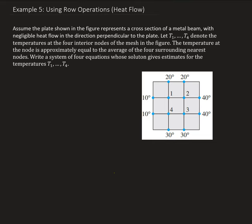In this example, we have a plate shown in this figure that represents a cross section of a metal beam with negligible heat flow in the direction perpendicular to the plate. Each of the nodes — 1, 2, 3, and 4 — denote the temperatures. So at node 1 we have temperature 1, at node 2 is temperature 2, and so on. These four nodes are inside the plate; they are the interior nodes of the mesh shown here.